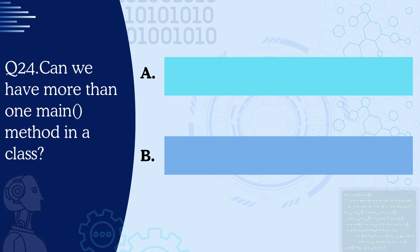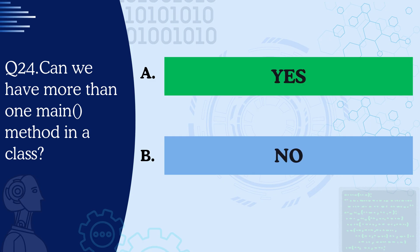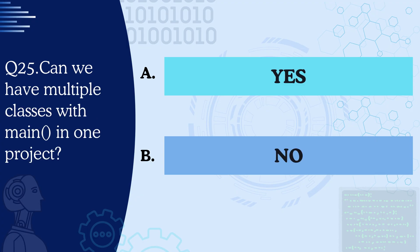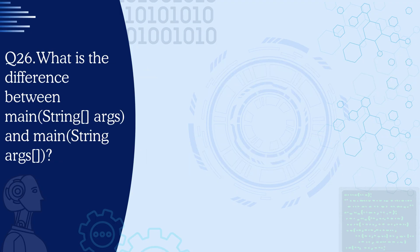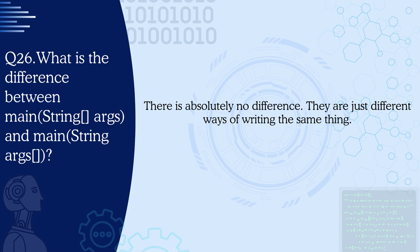Question 24: Can we have more than one main method in a class? Yes, we can — but their method parameters must be different. However, JVM will call only the one with String[] args. Question 25: Can we have multiple classes with main in one project? Yes — every Java file can have its own main method, and you have the liberty to run any class that has a main method. Question 26: What is the difference between main(String[] args) and main(String args[])? There is absolutely no difference — these are just different styles to write it.